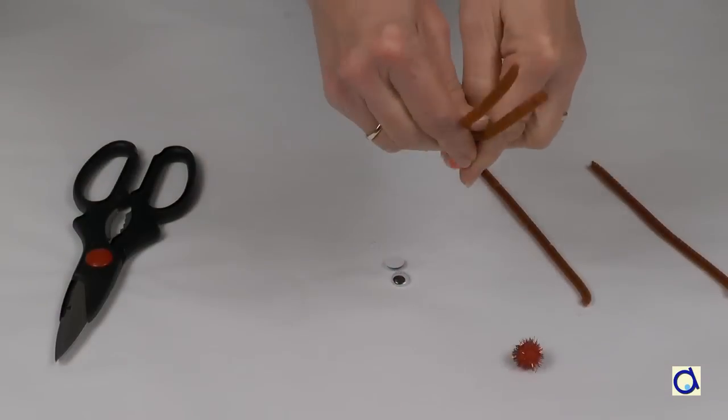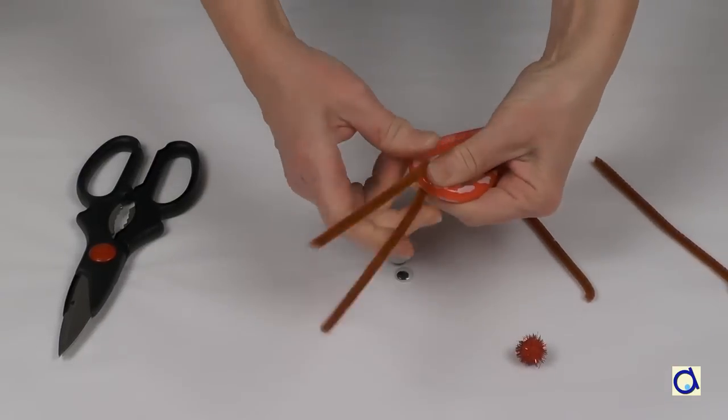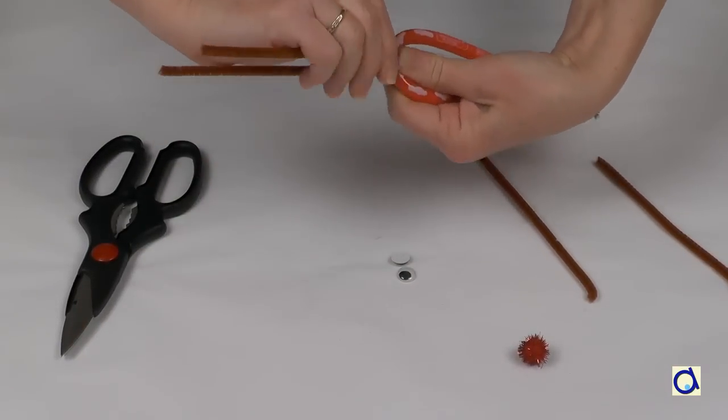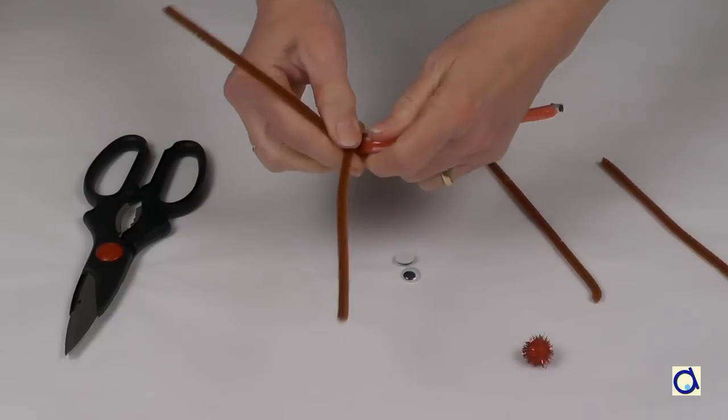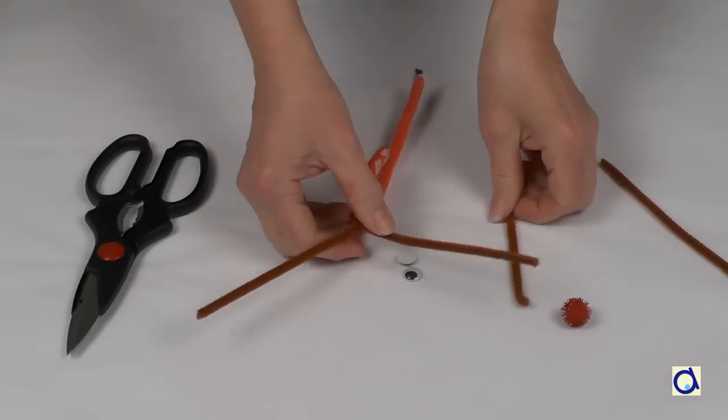If you want to create more sophisticated antlers, take a whole pipe cleaner that you attach as before in the curve of the candy cane. Then take another pipe cleaner that you cut in two.